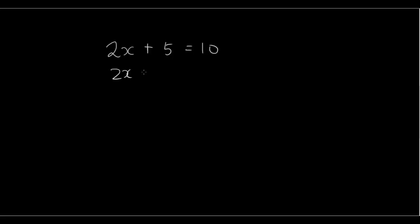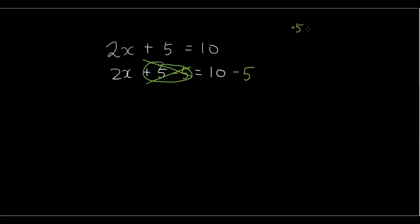So: 2x plus 5 equals 10, and I'm going to take away 5 on both sides. What's happening here is plus 5 and minus 5 next to each other will give you 0 — they cancel each other out. 5 minus 5 is 0, so on the left hand side the plus 5 is gone and we have 2x left. On the right hand side, 10 minus 5 is 5. So 2x equals 5.